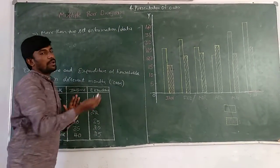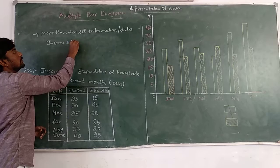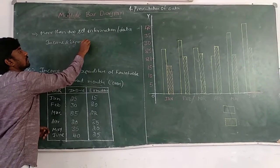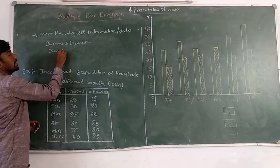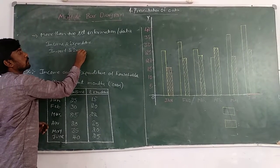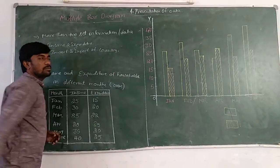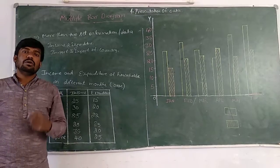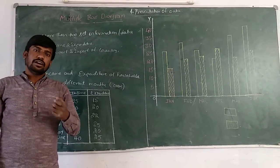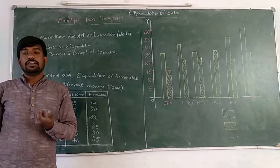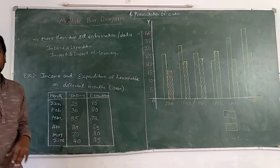We use the multiple bar diagram to compare related variables. For example, we can compare income and expenditure of a household in different months. We can also take import and export of a country in different years. Another example is marks in different subjects across different tests. We conduct many tests in one academic year and write different subjects, so we can present that in a multiple bar diagram.